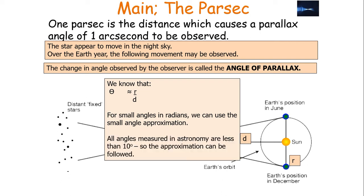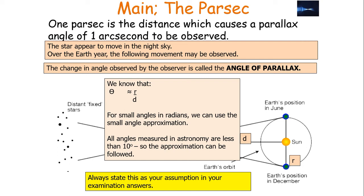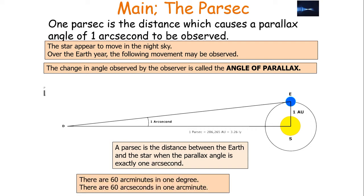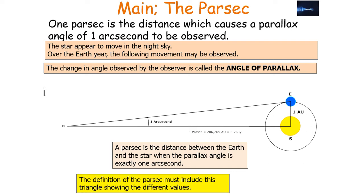All angles measured in astronomy are going to be less than 10 degrees, so this particular approximation is always followed. Remember, when you give an answer and you use this in an examination, please state that you are using the small angle approximation as an assumption. We can now define a parsec as the distance between the Earth and the star when the parallax angle is exactly one arc second. There are 60 arc minutes in one degree and there are 60 arc seconds in one arc minute. Therefore, the definition of an arc second is it's 1/3,600th of a degree, as there are 3,600 — 60 times 60 — arc seconds in a degree.